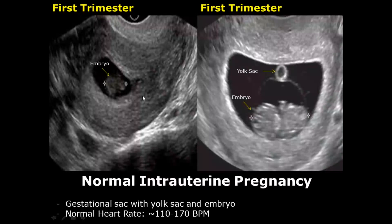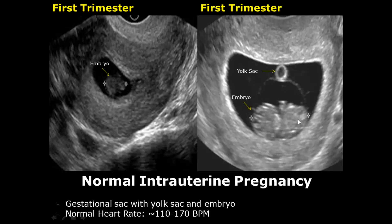A normal intrauterine pregnancy consists of a gestational sac containing a yolk sac, which is a circular structure with an echoic or hypoechoic center and a hyperechoic border, and an embryo containing a heartbeat that is usually between 110 to 170 beats per minute.